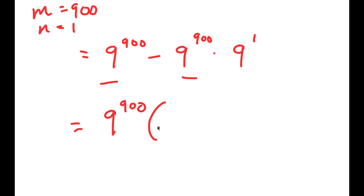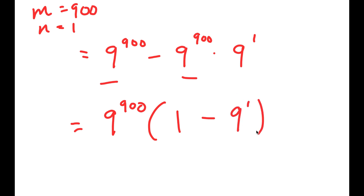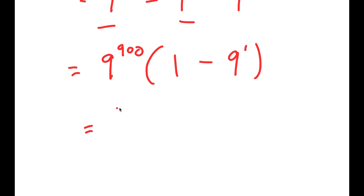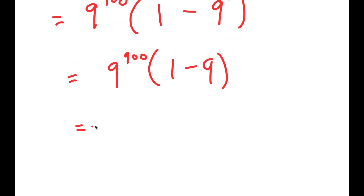So I get 9 to the power of 900 times — well, 9 to the power of 900 divided by 9 to the power of 900 is just 1, and I have 1 minus 9 to the power of 900 times 9 to the power of 1 divided by 9 to the power of 900, which leaves 9 to the power of 1. This equals 9 to the power of 900 times 1 minus 9, and since 9 to the power of 1 is 9, that gives 9 to the power of 900 times negative 8, because 1 minus 9 is negative 8.